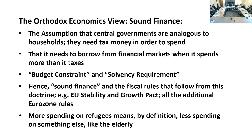What we get out of this is that more spending on refugees means, by definition, less spending on something else — like the elderly. MMT is applied to climate policy, to unemployment policy, and I take it to be very important in this debate on migration, because here we have people coming into societies. It's not a fight between more money for schools or more money for elderly care — here the fight is between more money for elderly care or more money for foreigners coming in. And that's why this debate is particularly toxic.